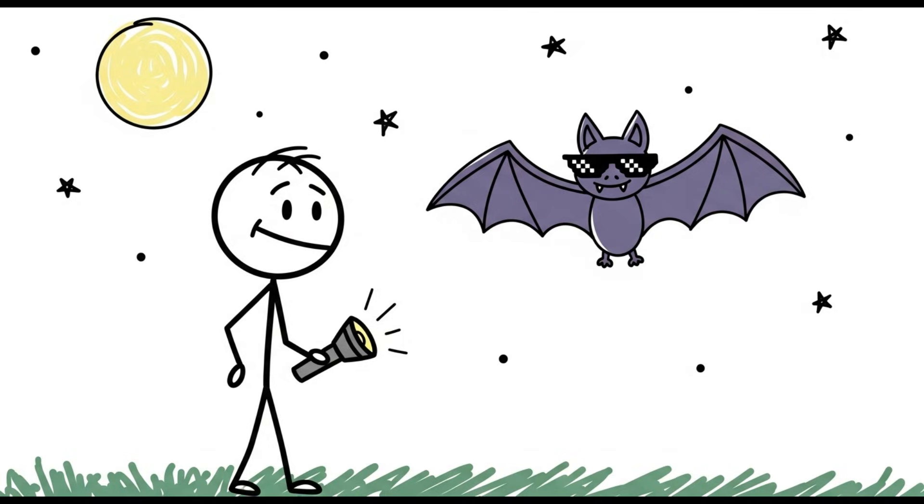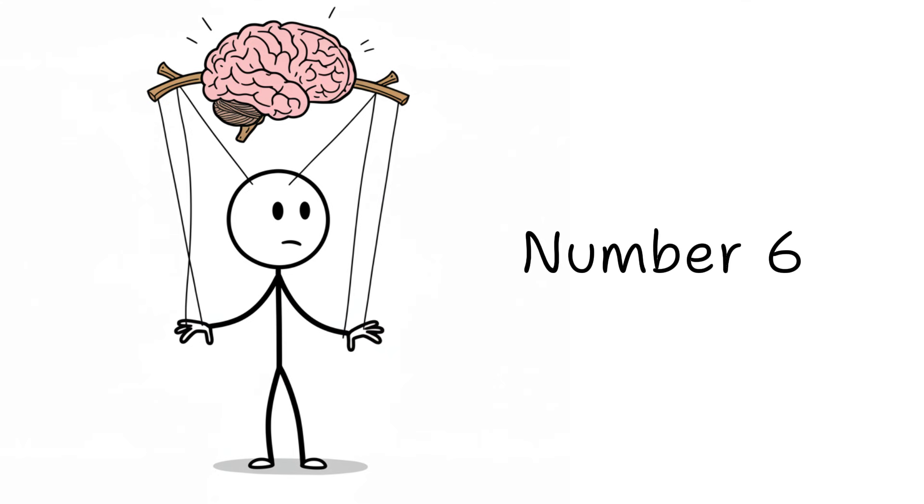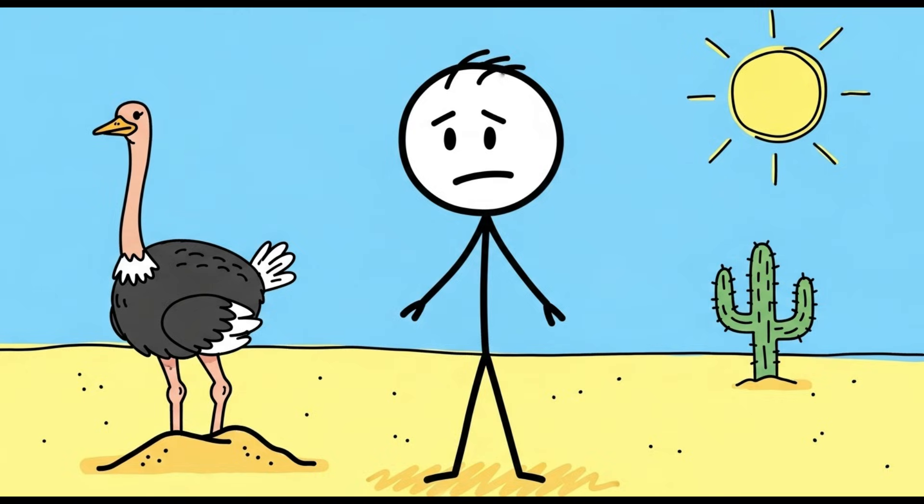So, a bat isn't a blind creature fumbling in the dark. It's a tactical night ops mammal with more sensory input than your brain could handle before it blue-screened. Number six, the ostrich headberry.